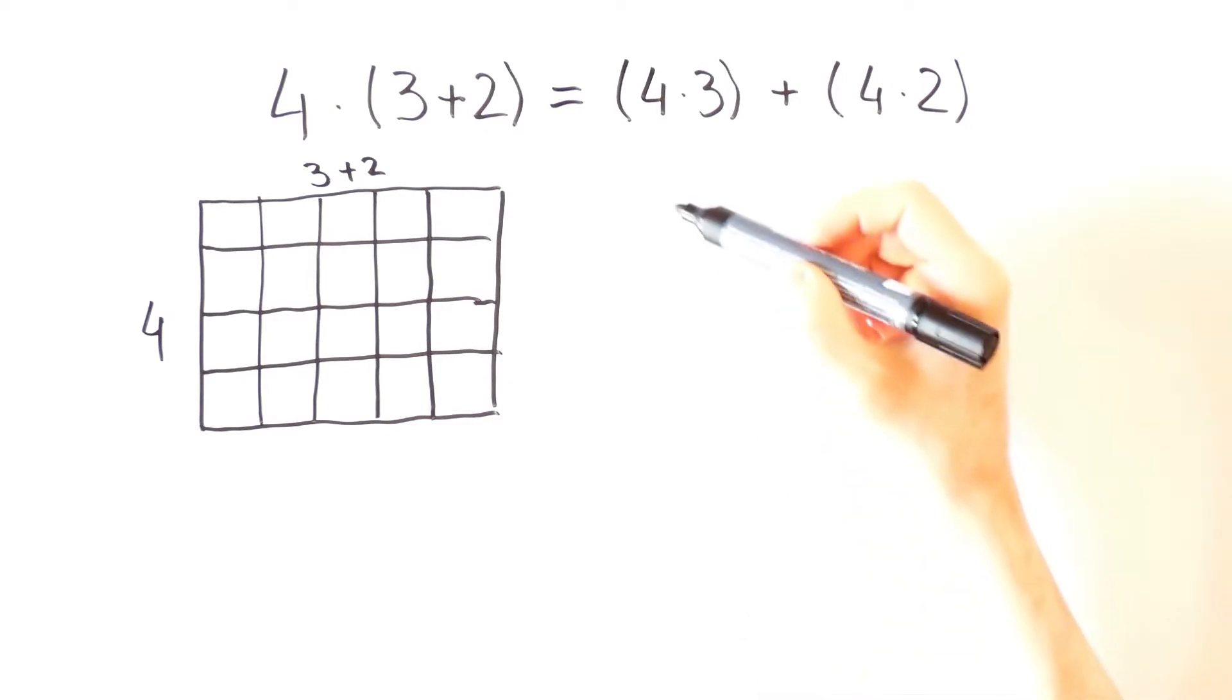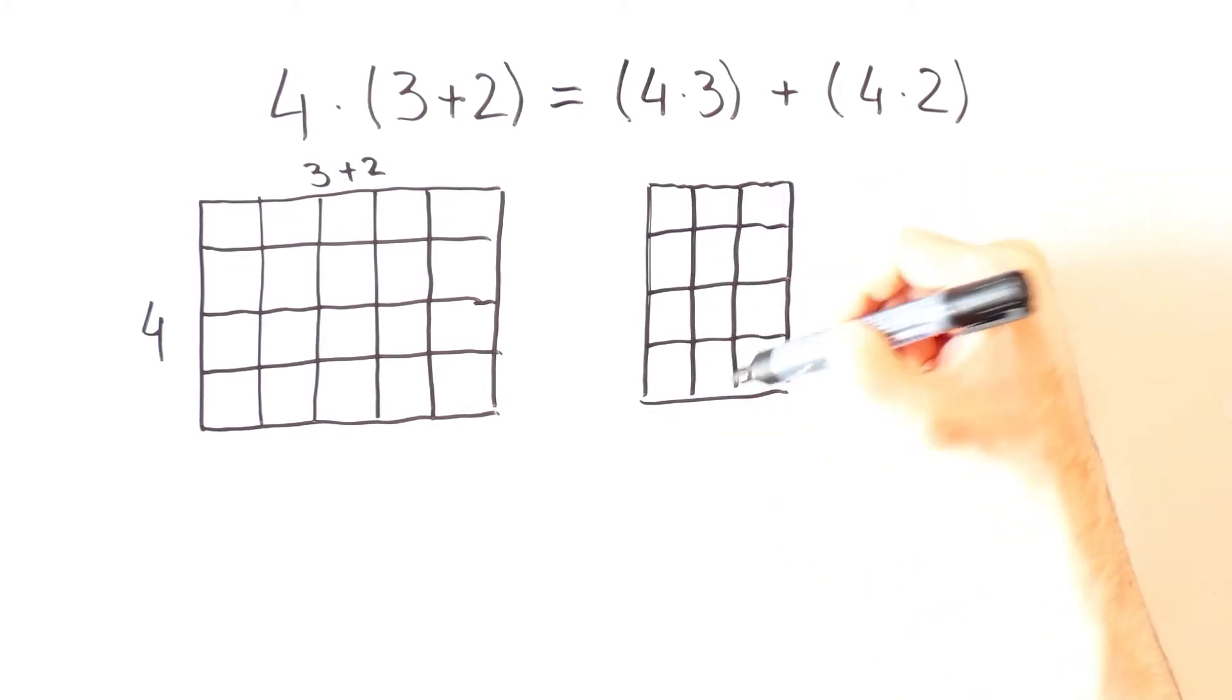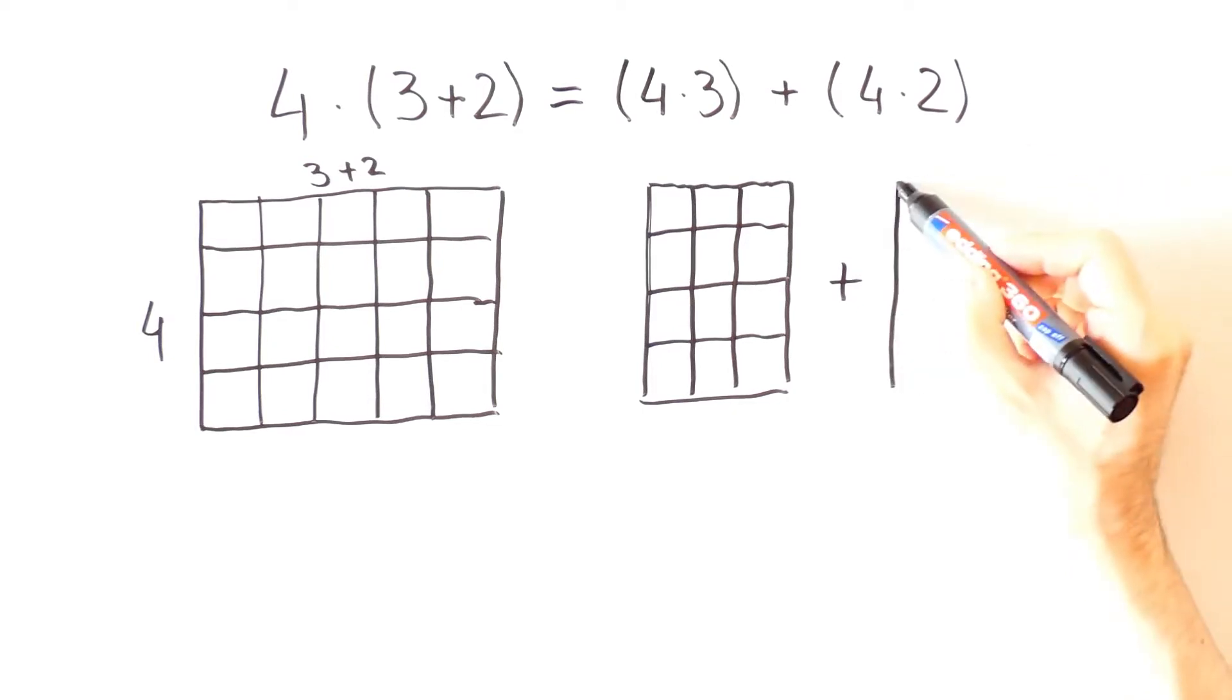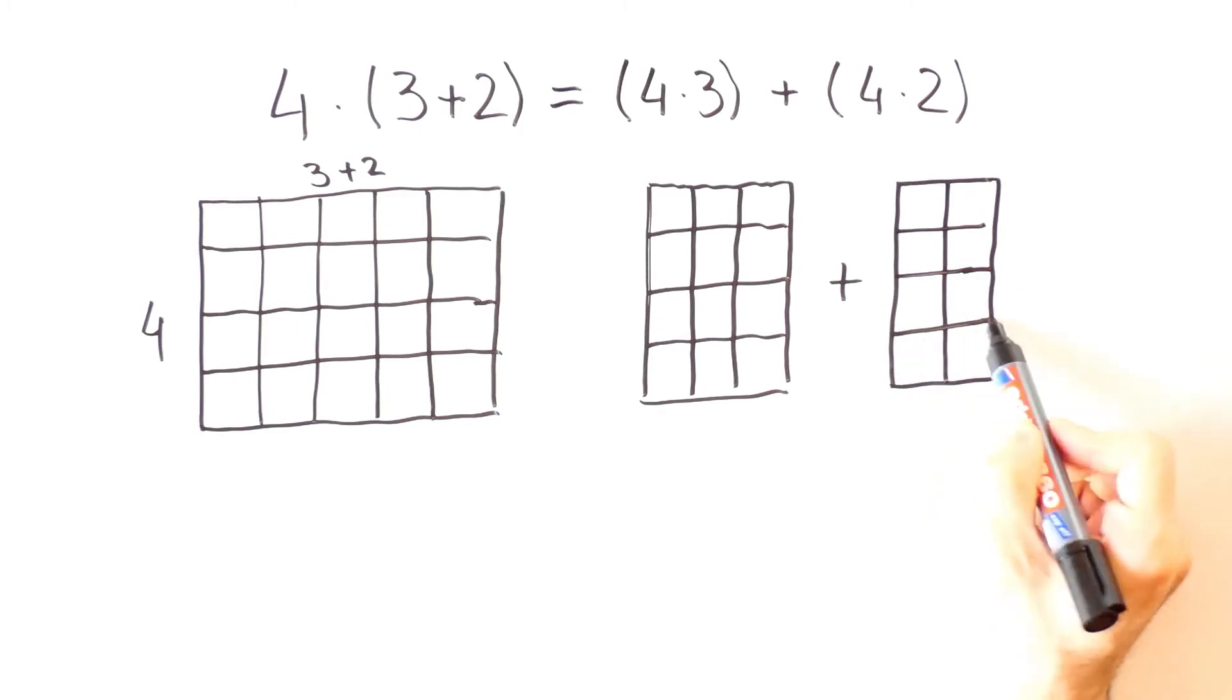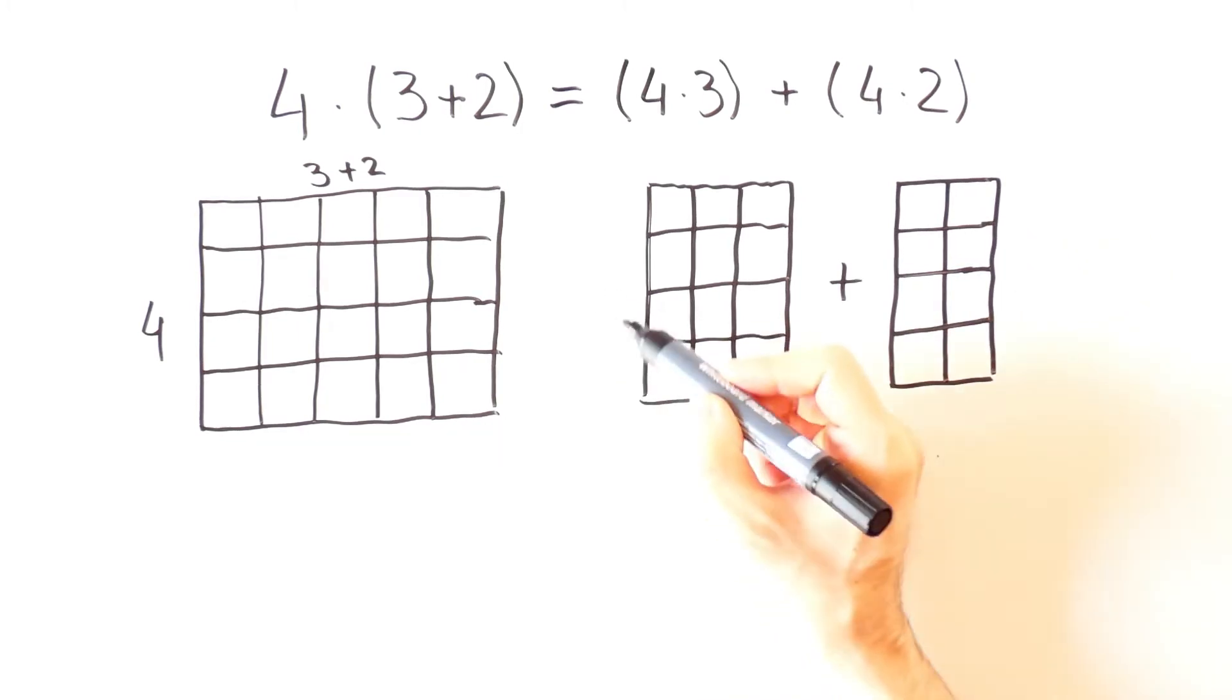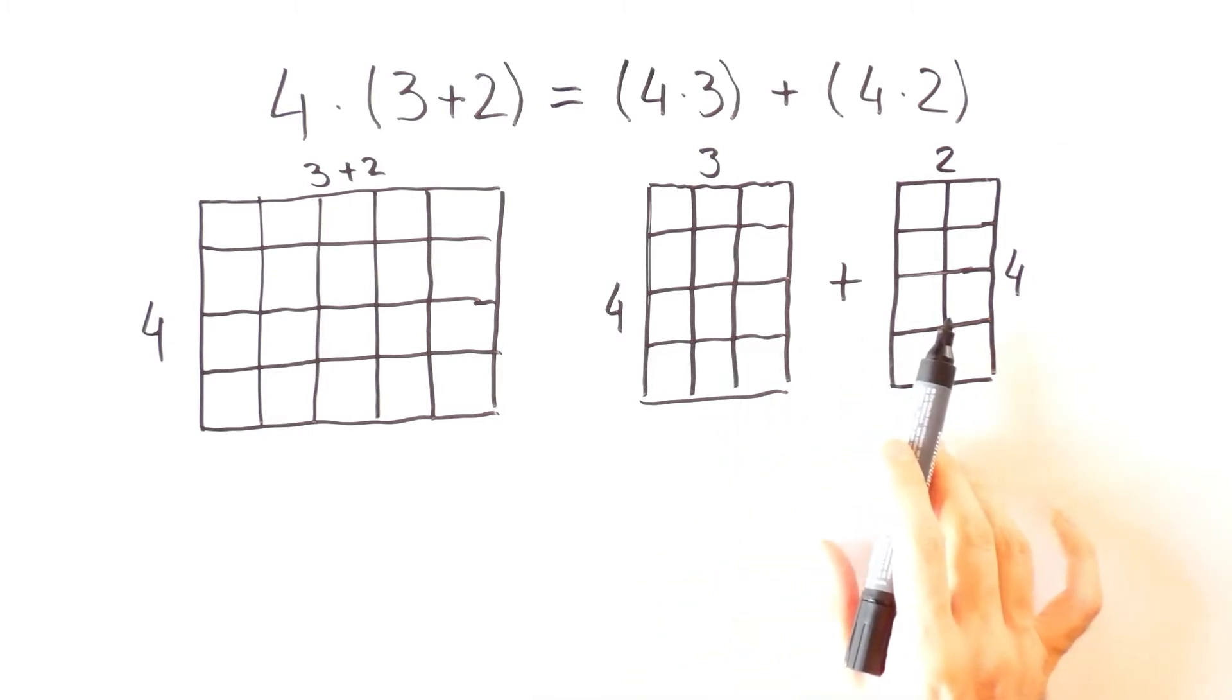And on the right we have 4 times 3 plus 4 times 2. Now, if we merge these two rectangles we would get a rectangle that looks like this one on the left.